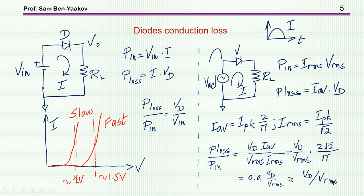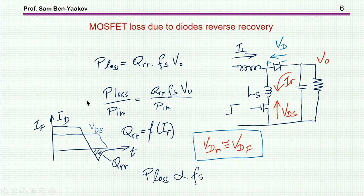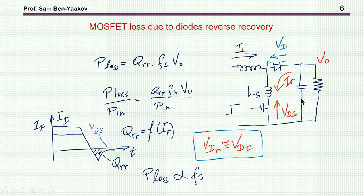Aside from conduction losses, we have losses associated with the switching — specifically, losses due to the reverse recovery of the diode. In the boost converter, we have the main inductor, the diode, and stray inductance present throughout the circuit. Assuming current was flowing through the inductor through the diode — during the off-time of the transistor — and then we turn on the transistor, the current will start building up here and will simultaneously reduce the current of the diode.